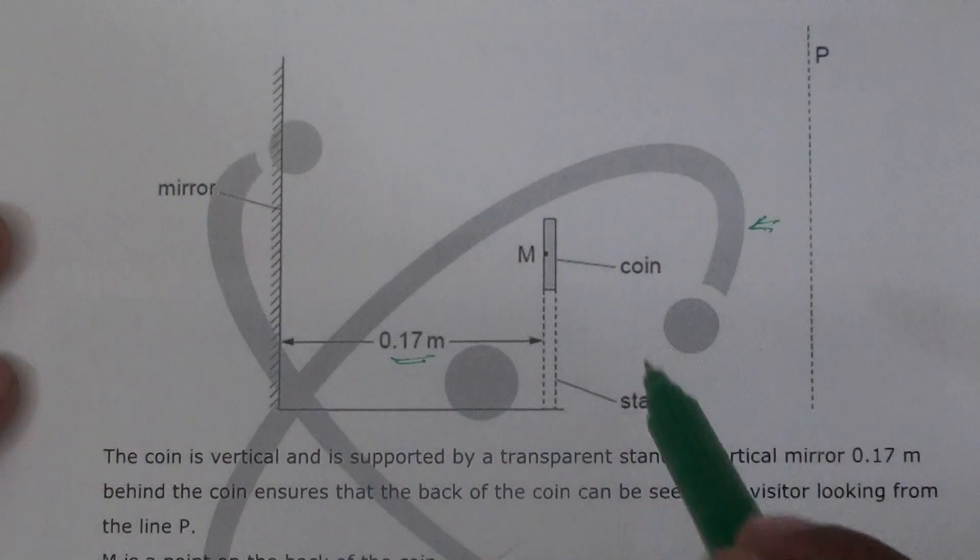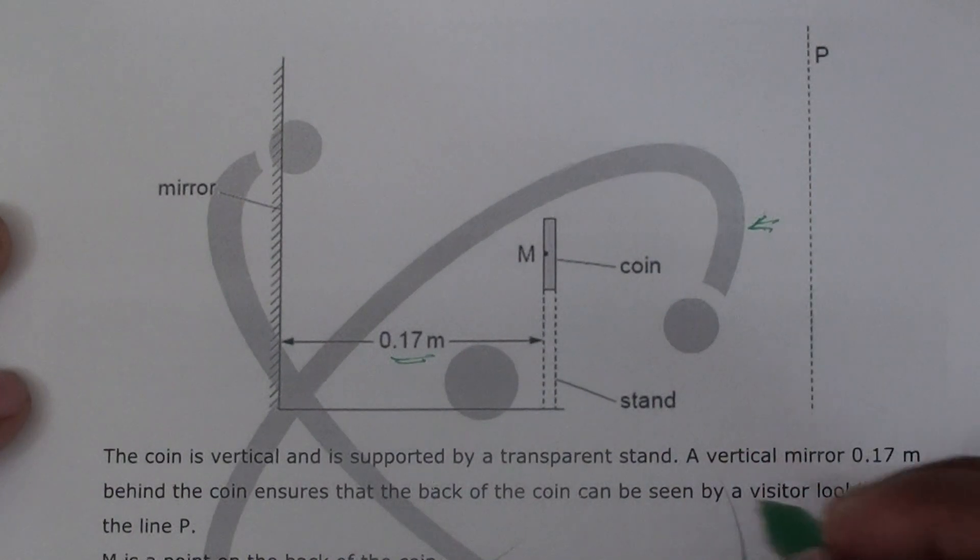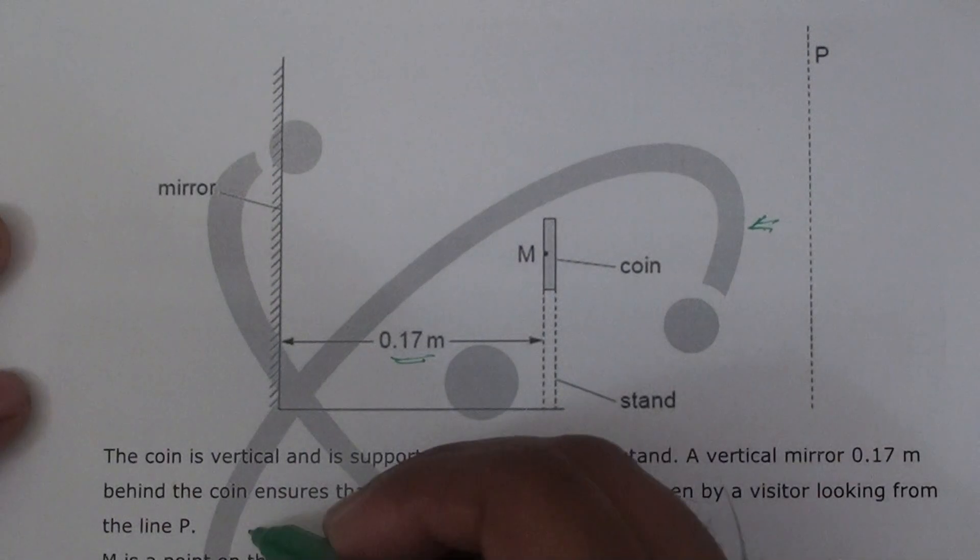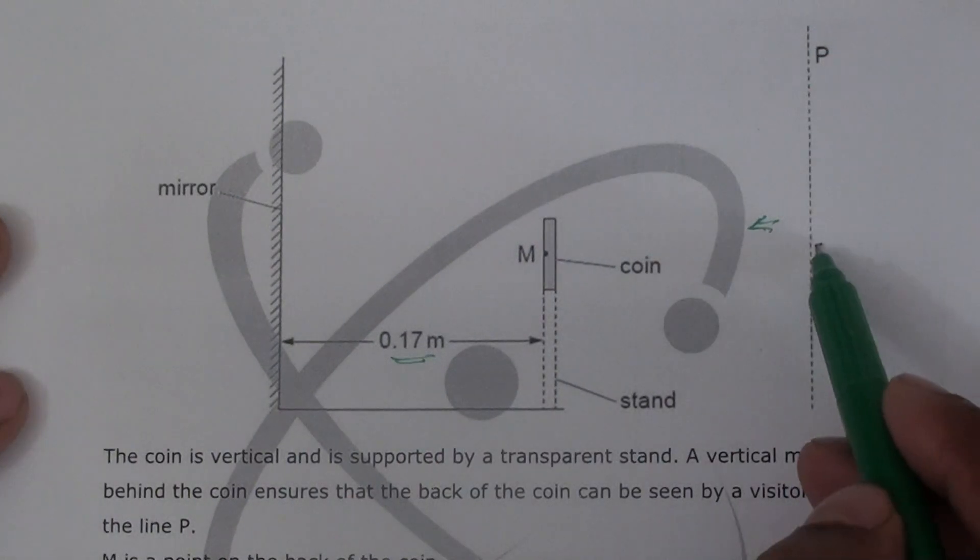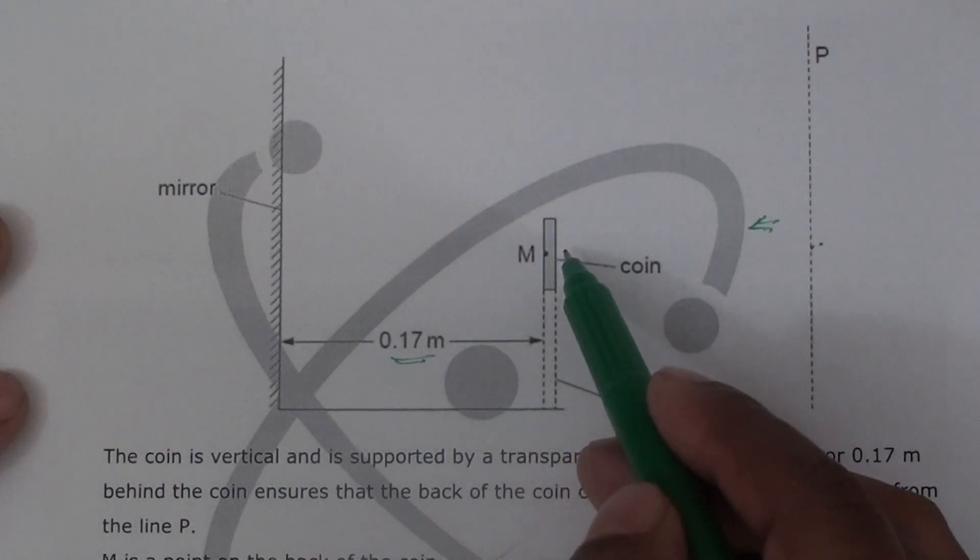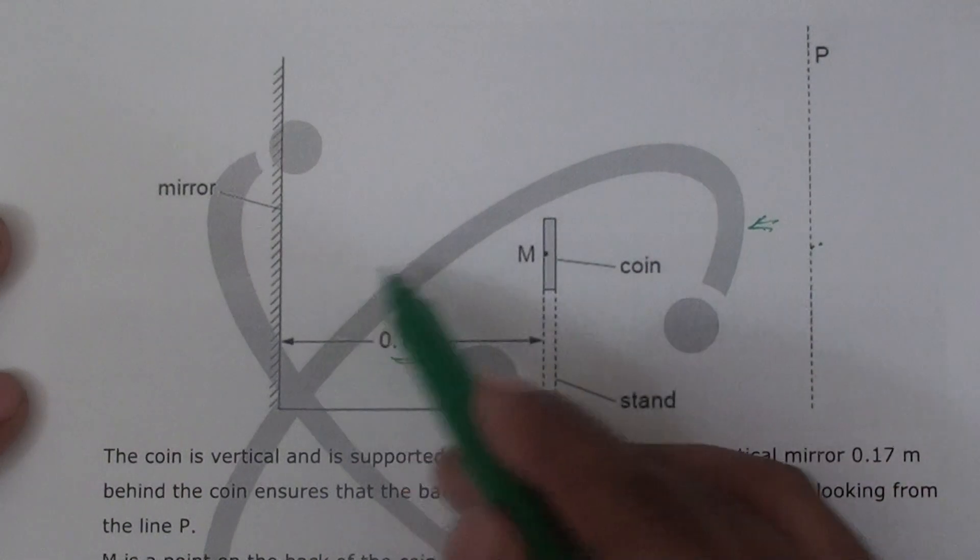This is not to scale, by the way. The back of the coin can be seen by a visitor looking from the line P. From this line, visitors can see this coin front and back.